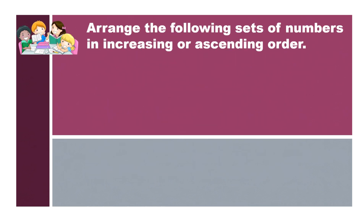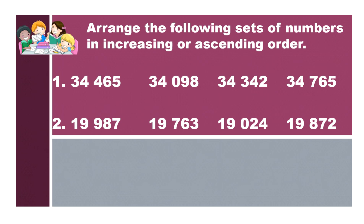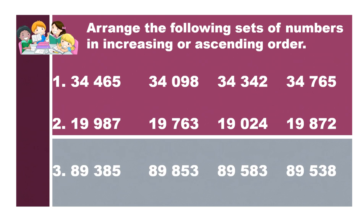Now let us check your understanding. Arrange the following sets of numbers in increasing or ascending order. Number 1: 34,465, 34,098, 34,312, and 34,765. Number 2: 19,987, 19,763, 19,024, and 19,873. Number 3: 89,385, 89,853, 89,583, and 89,533.